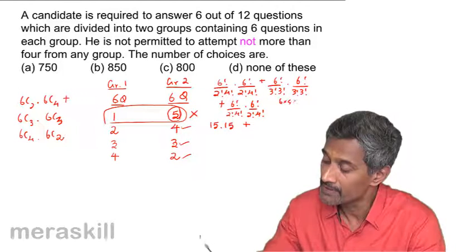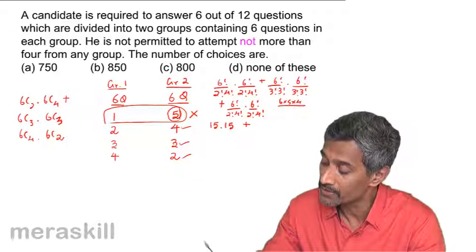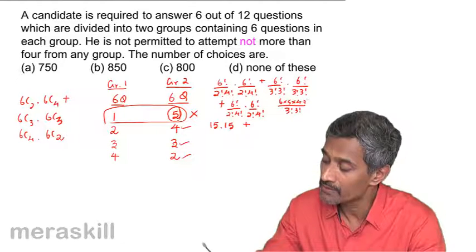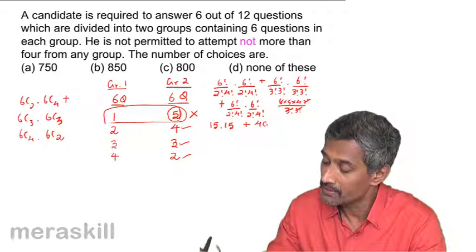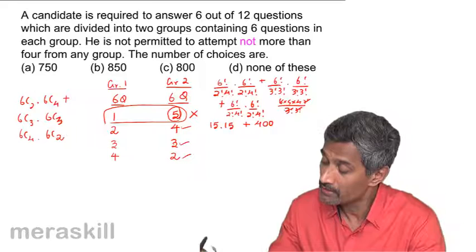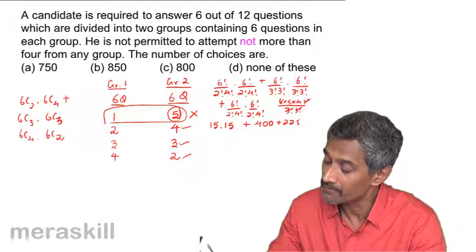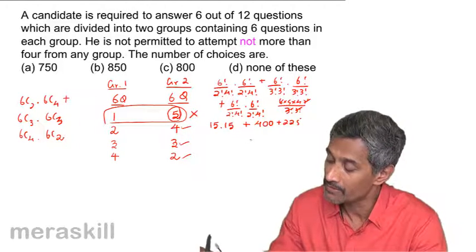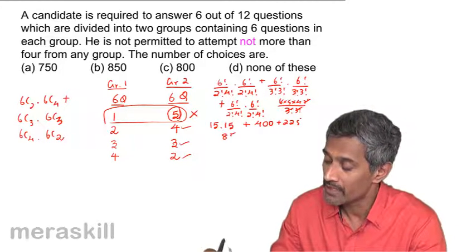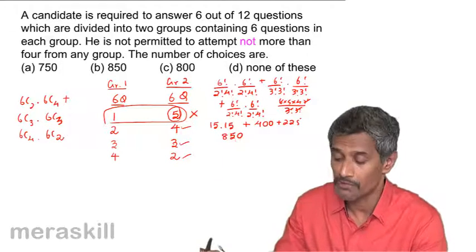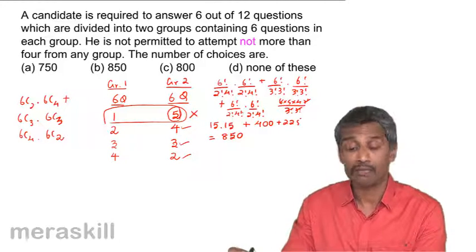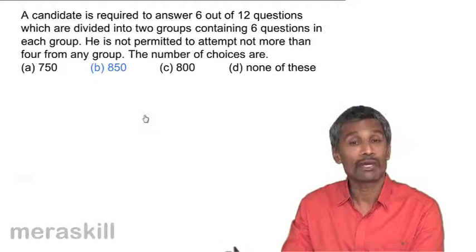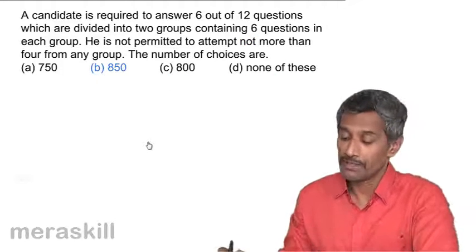So we have 225 + 400 + 225 = 850 possibilities. There are 850 ways in which this can be done.